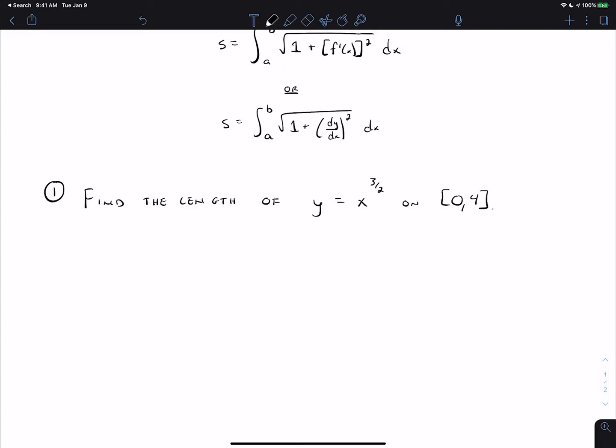All we do is take the derivative. I'm going to write the derivative as dy dx. The derivative of that is 3 halves x to the 1 half. So the integral that gives arc length is the integral from 0 to 4 of the square root of 1 plus 3 halves x to the 1 half squared dx. Now we can simplify that.